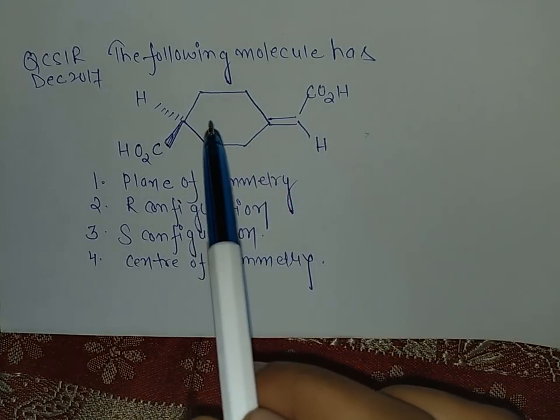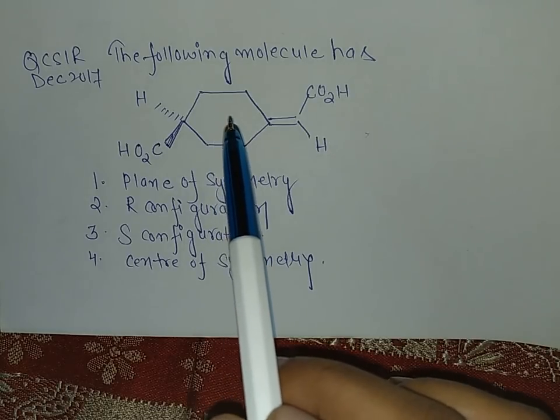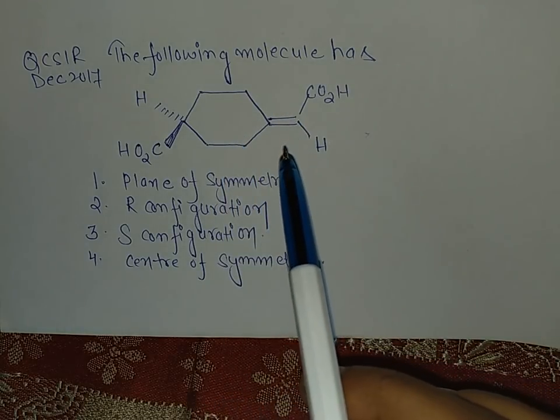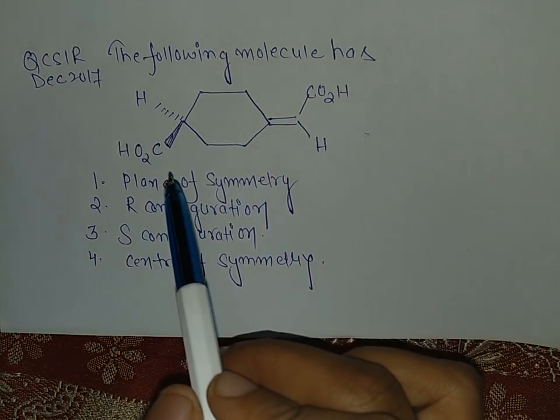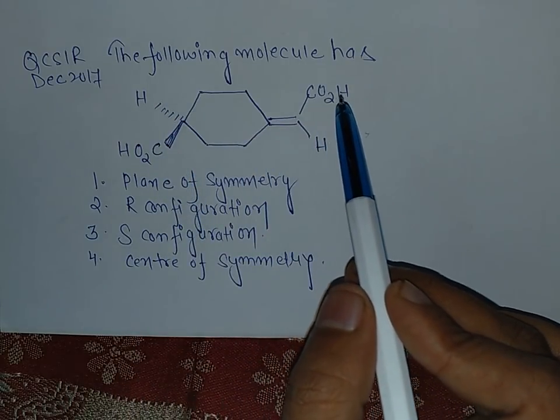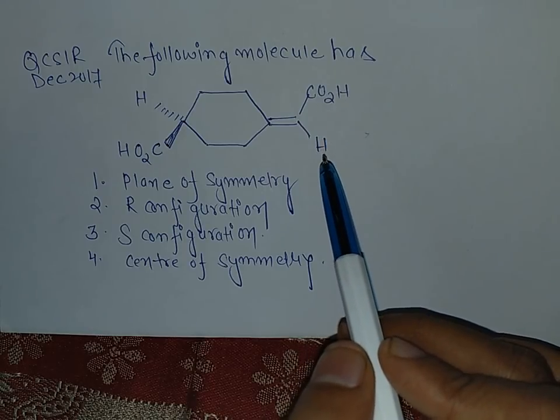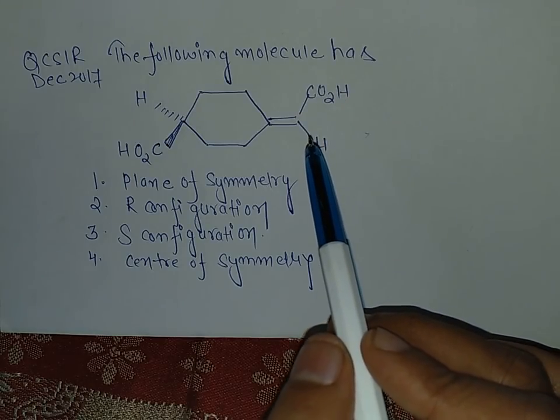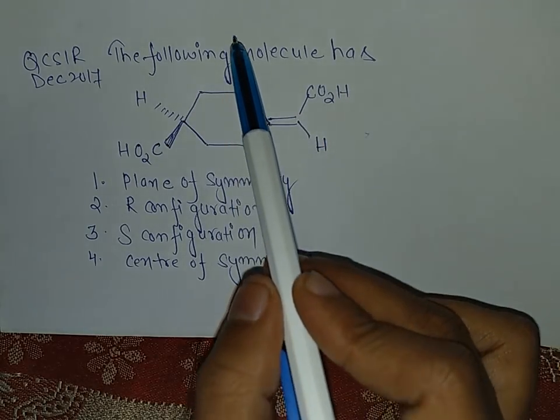First of all we can't find any plane so that two groups will reflect each other. If we pass a plane from this group bisecting this group, we have CO2H group reflecting hydrogen group so this cannot be the plane.